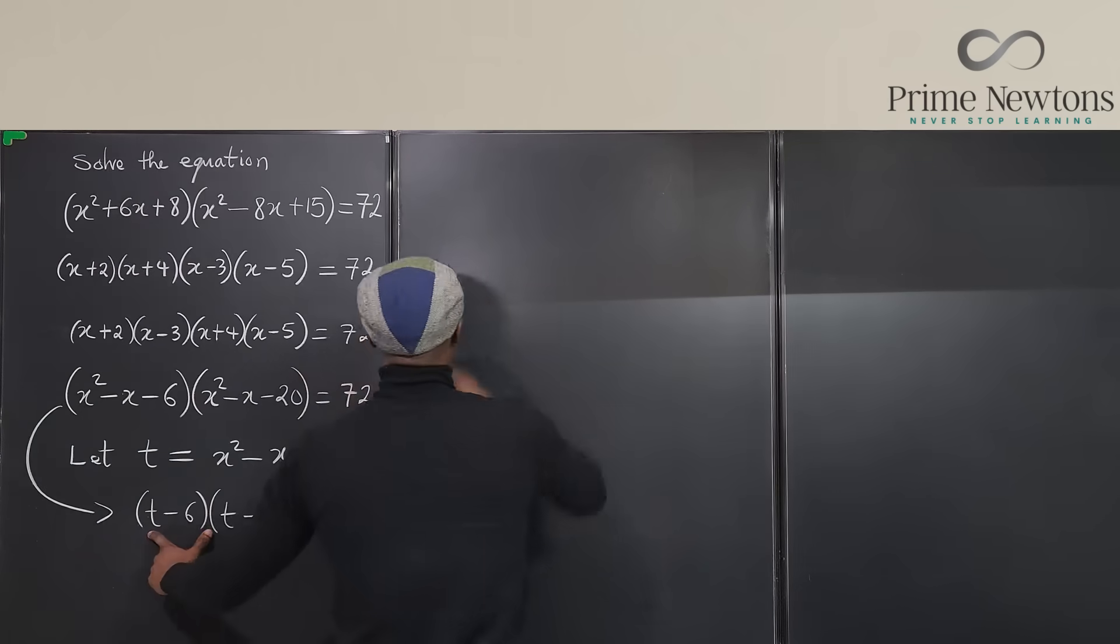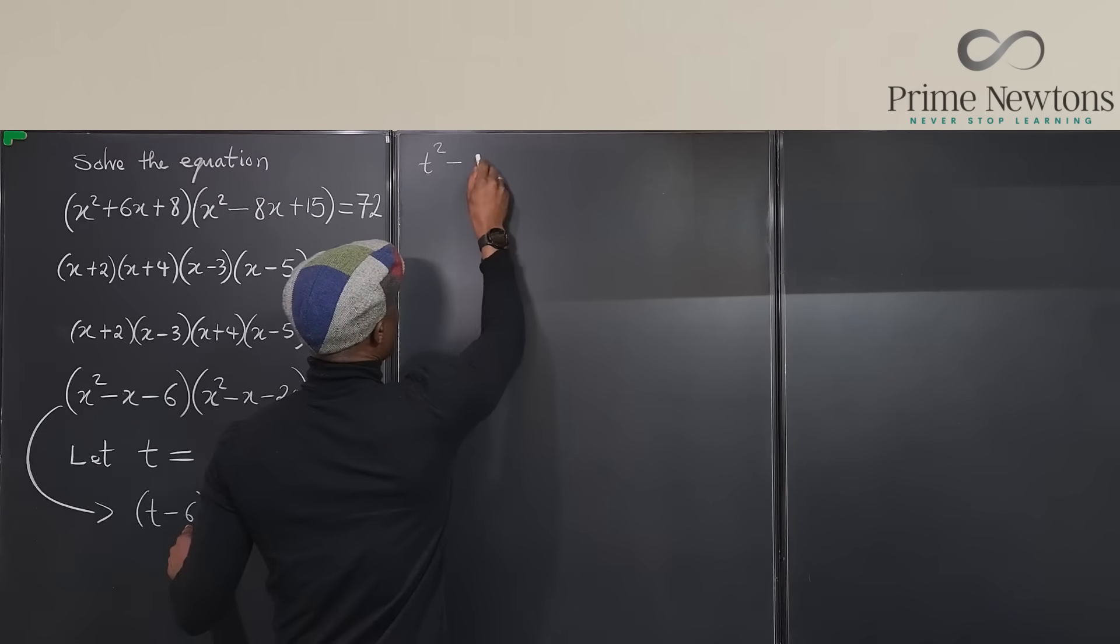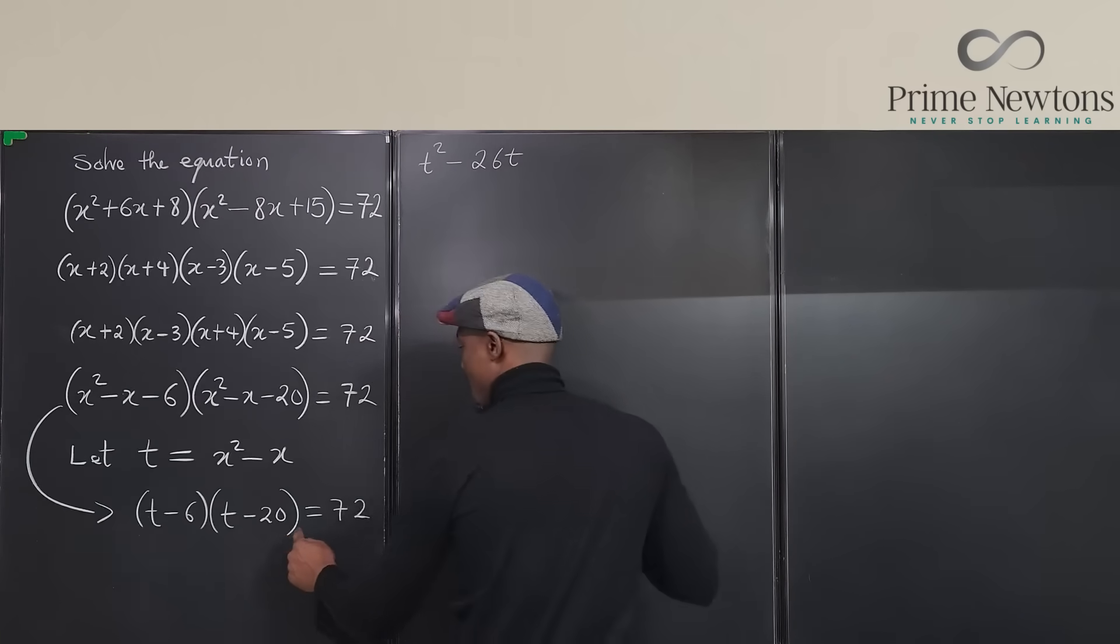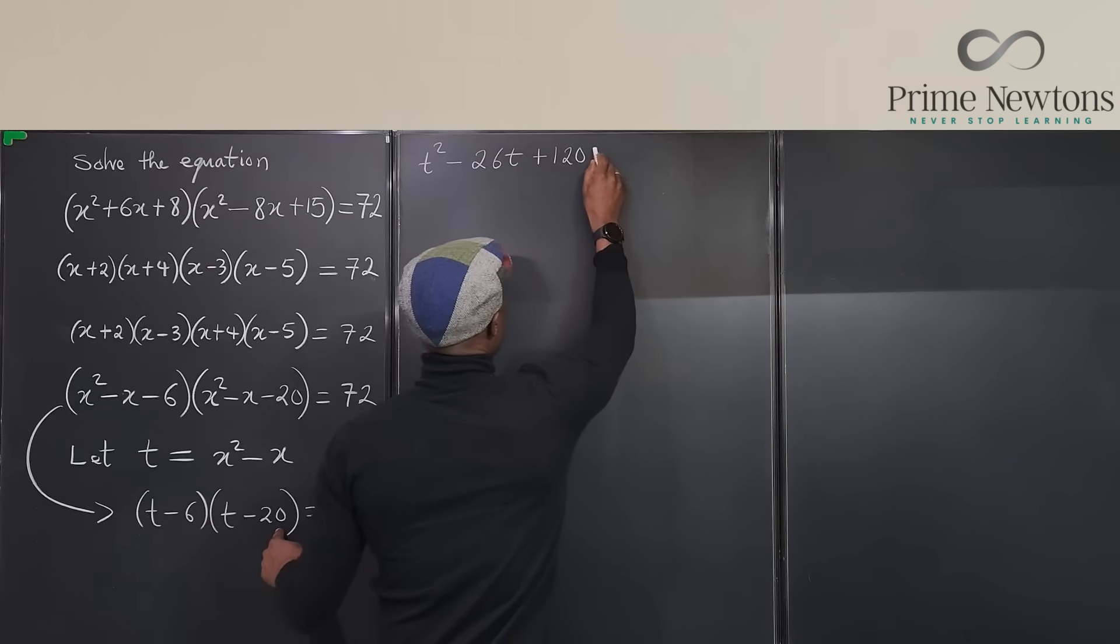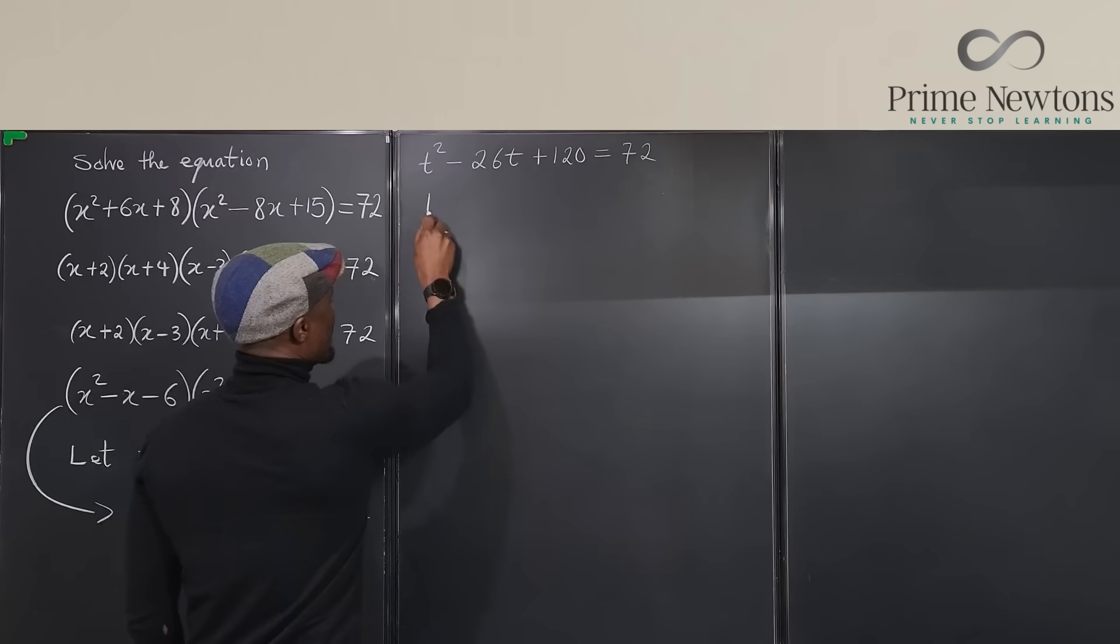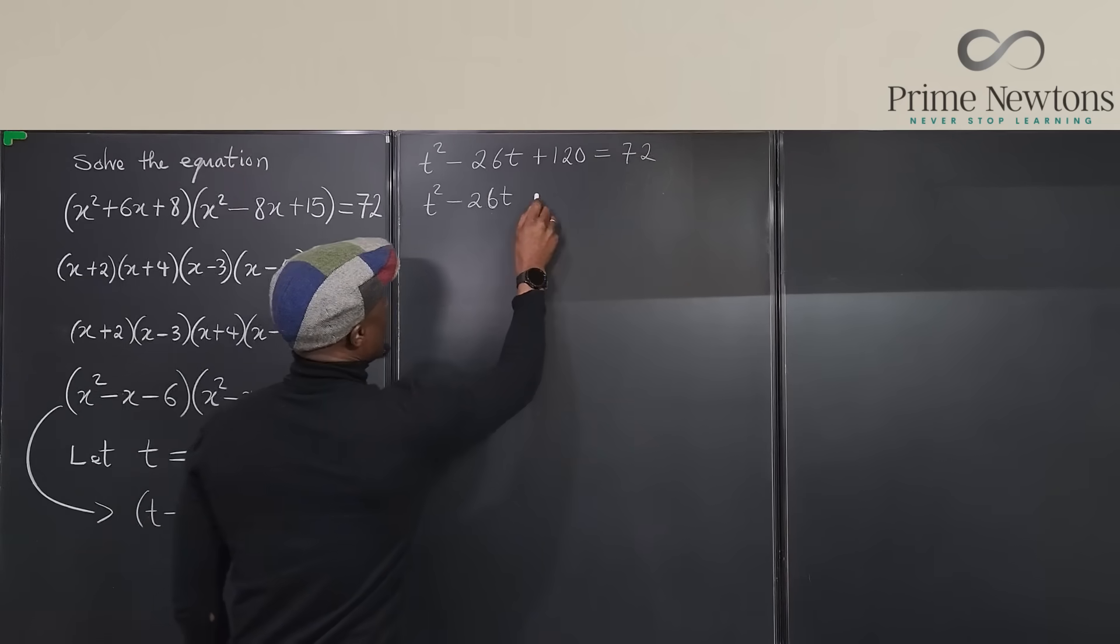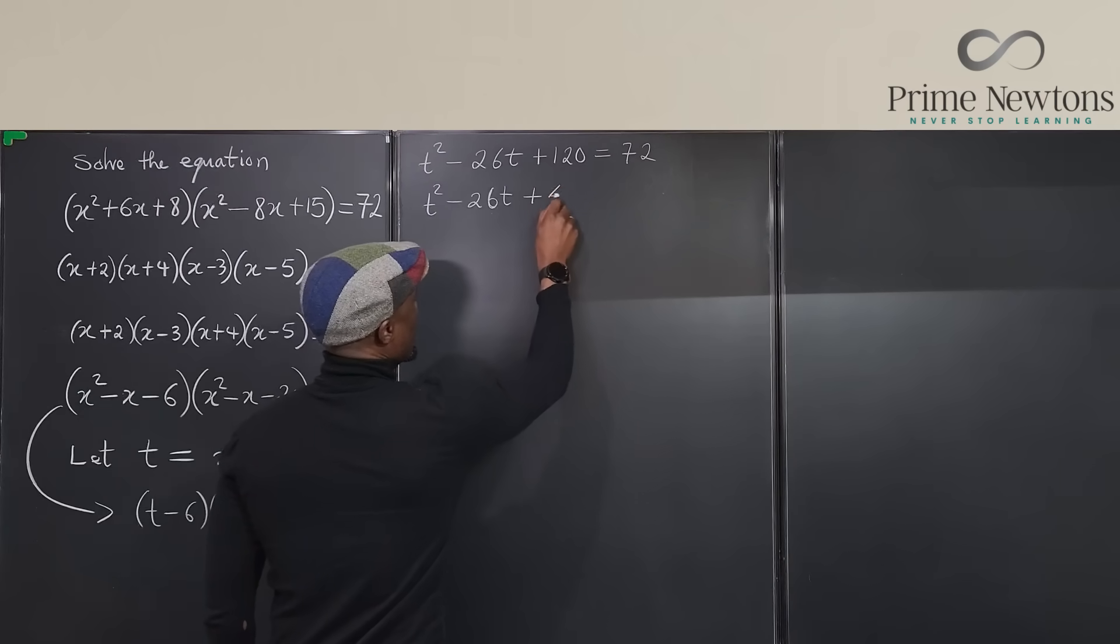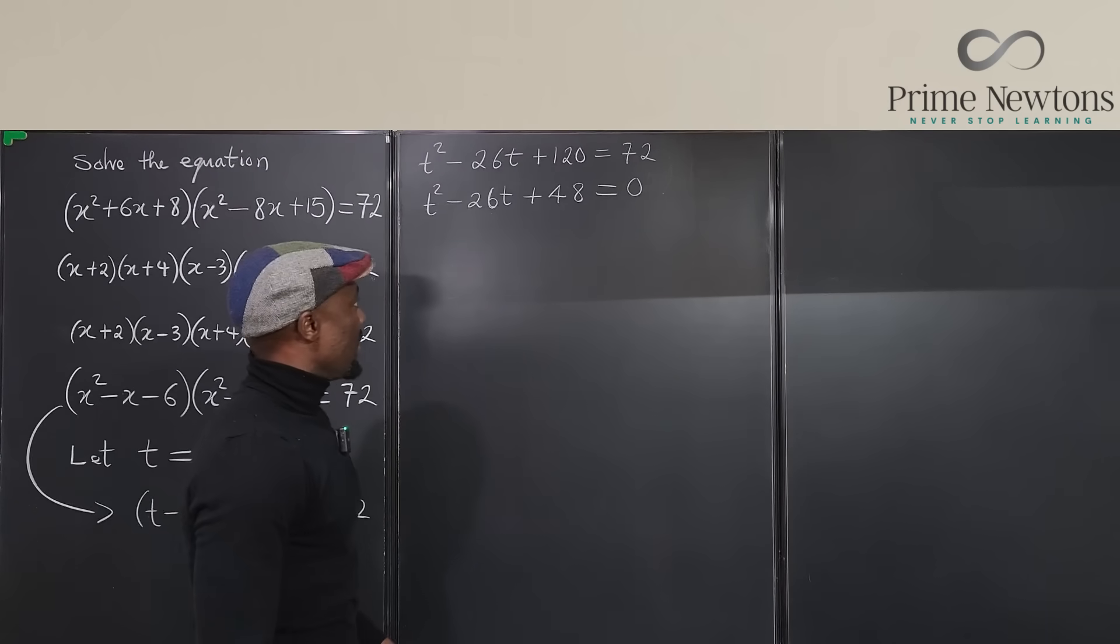So if we multiply these two, we're going to end up with t squared. We're going to have minus 20t minus 6t, so that's going to be minus 26t. And then we're going to have plus 120 equals 72. Now we can move the 72 here and get a quadratic equation, t squared minus 26t. If you subtract 72, you're going to end up with plus 48 equals zero.